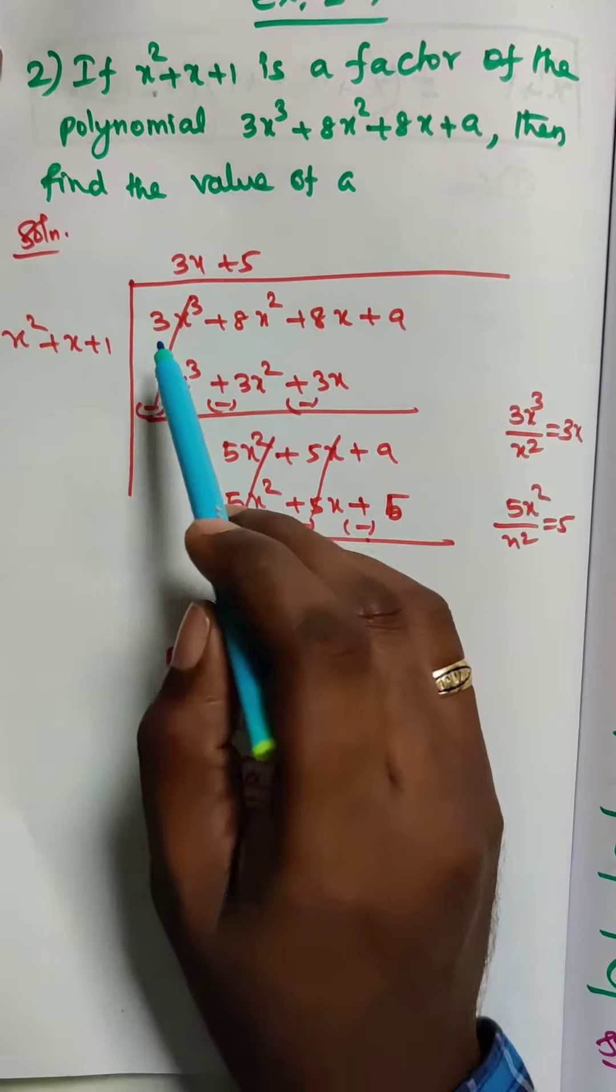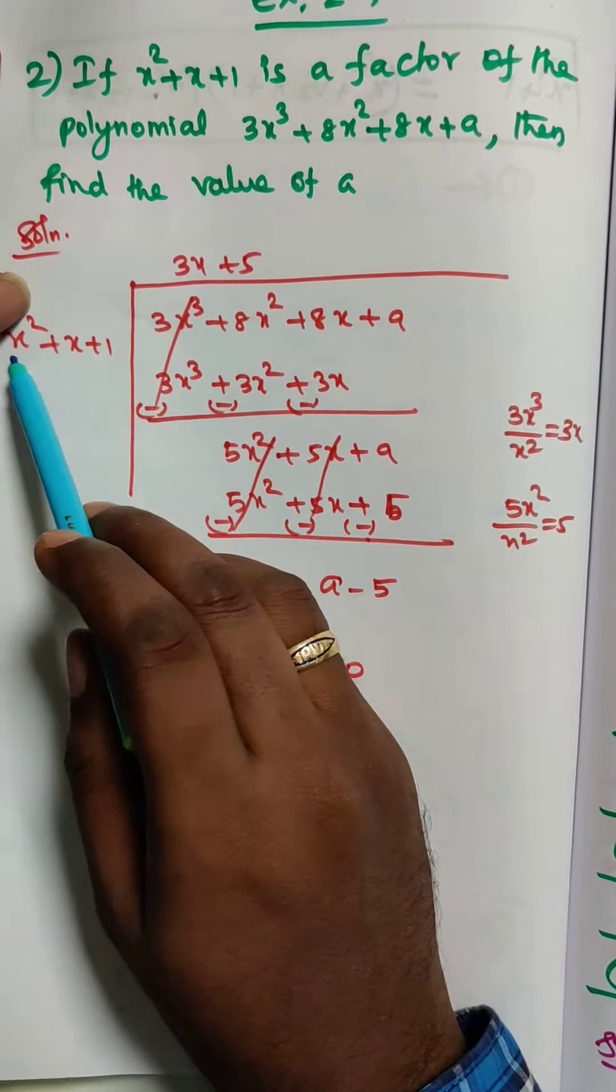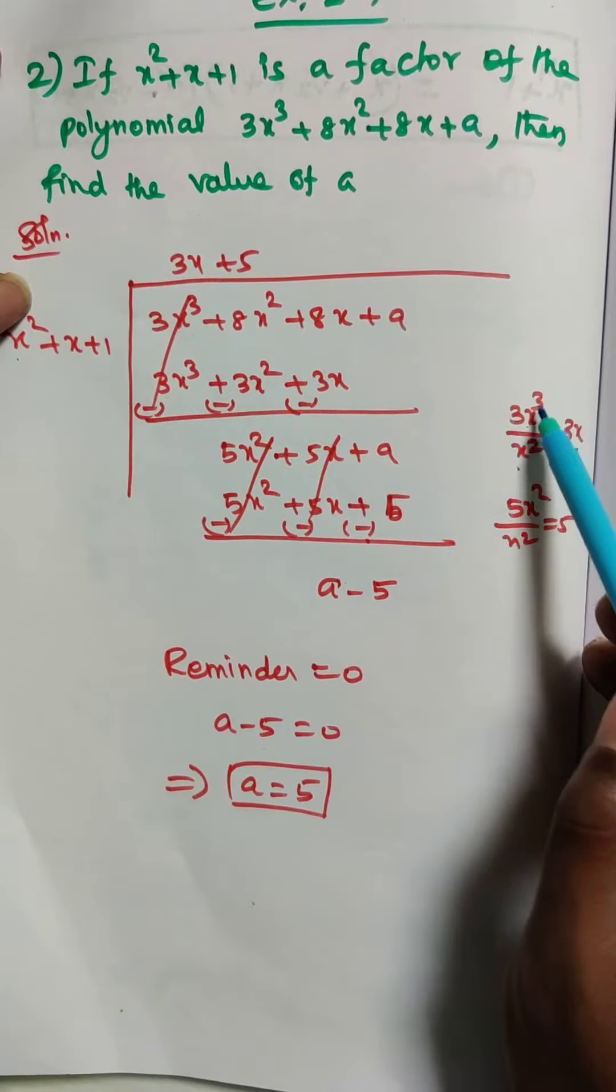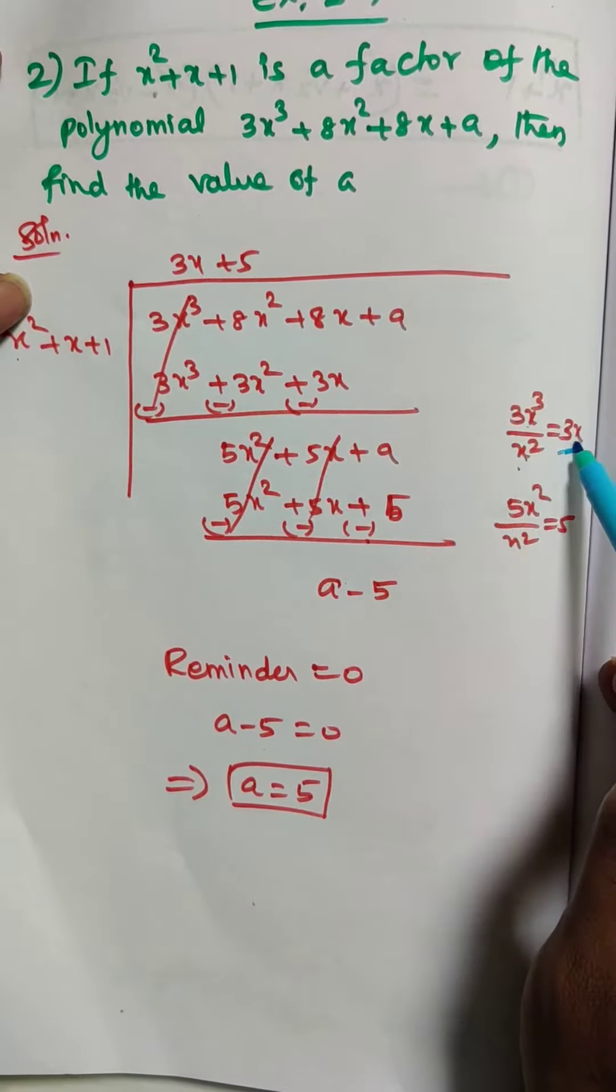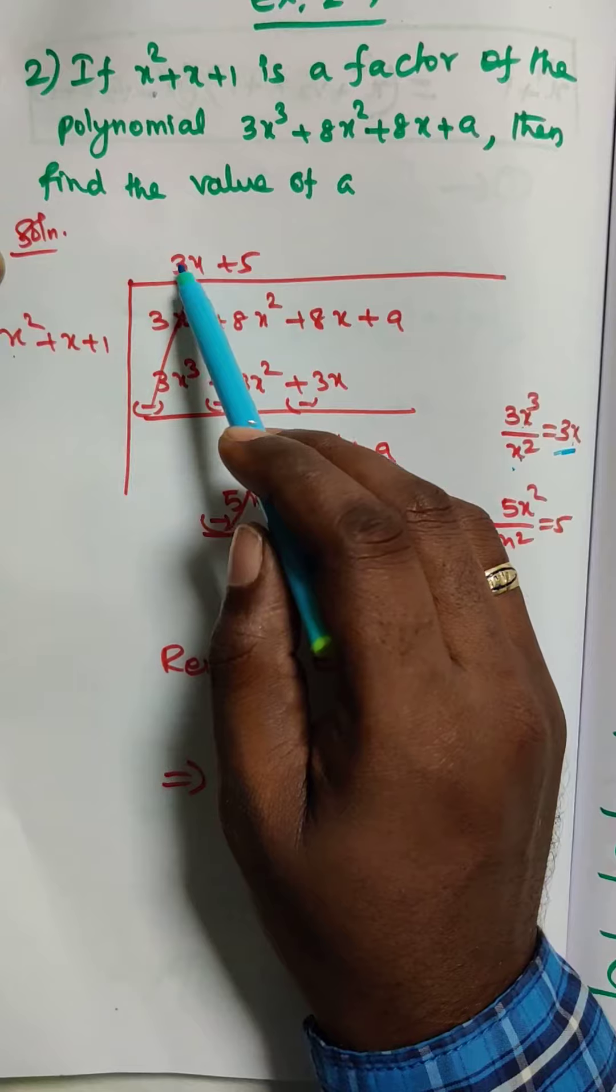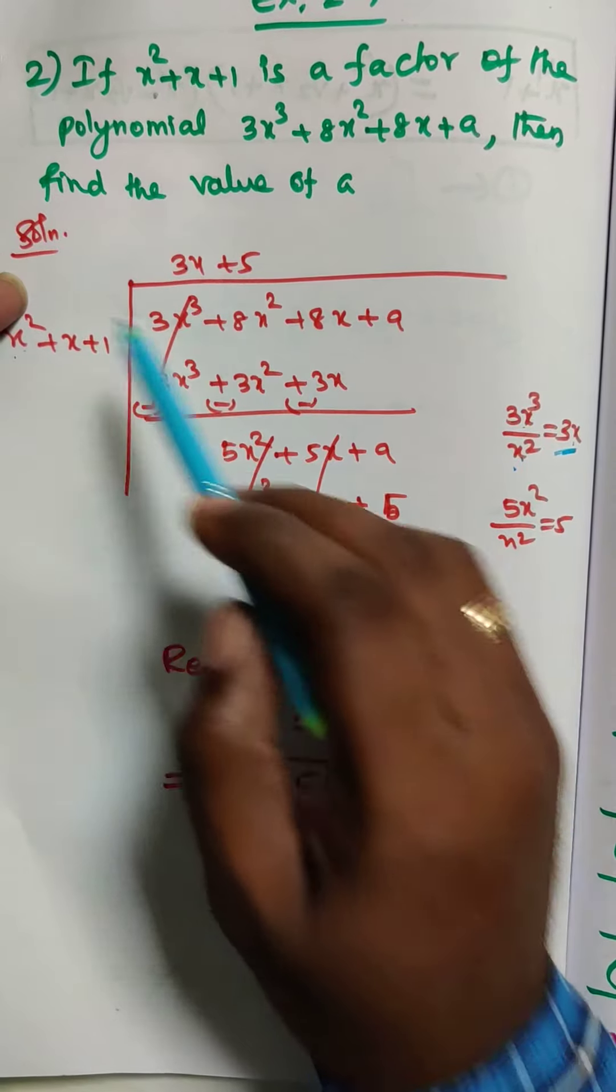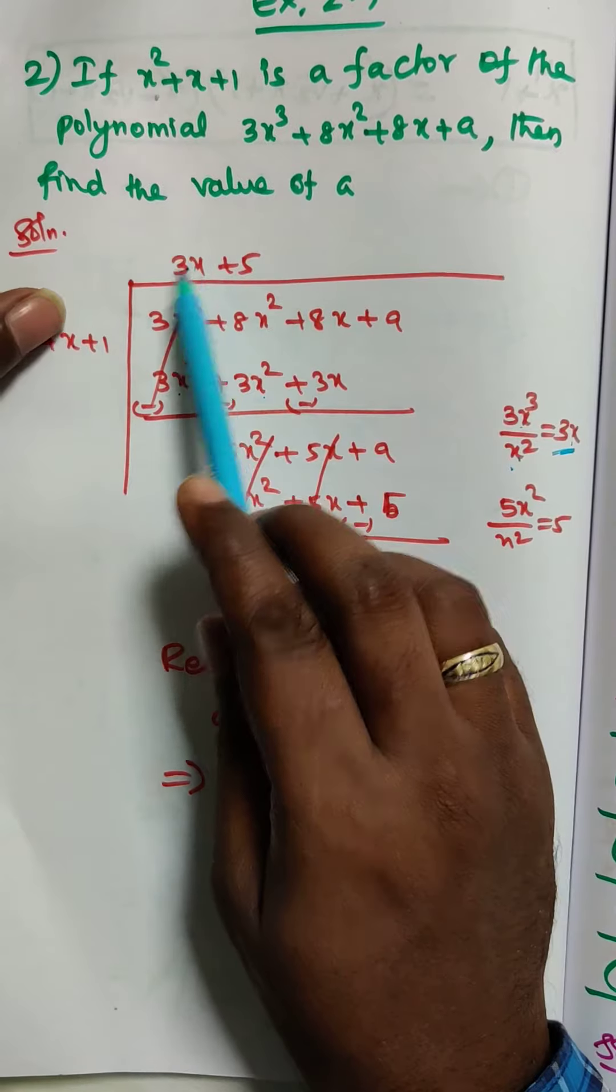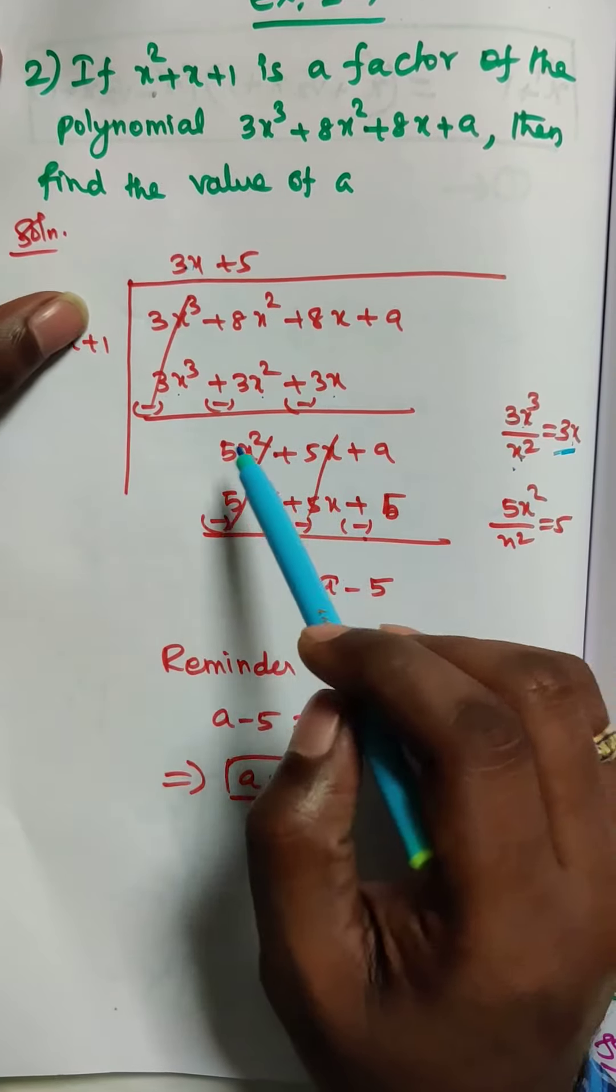First I am going to take 3x³ divided by x². 3x³ divided by x² equals 3x. So we have to multiply by 3x. 3x into x² is 3x³, 3x into x is 3x², 3x into 1 is 3x. We have to change the signs.